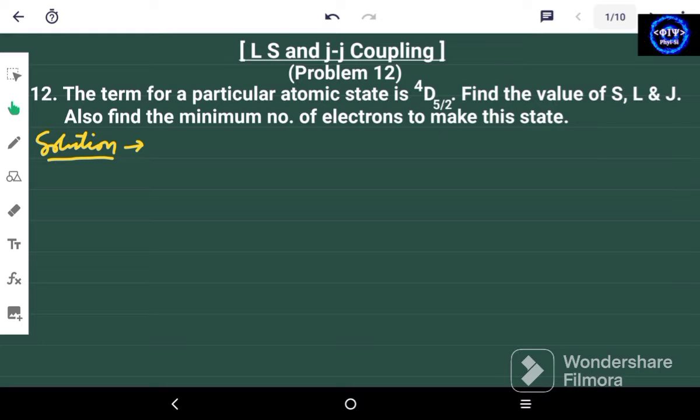So we have given the term that is 4D5/2. We know this 4 is actually the multiplicity. So the multiplicity is equal to 4.